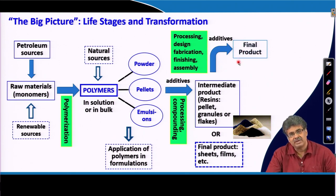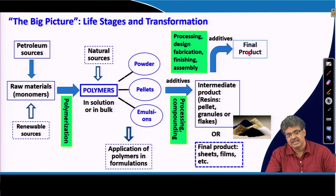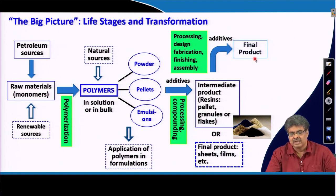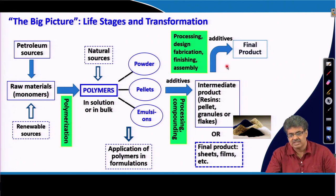In the laboratory, we do not actually make the final product — those are done on commercial lines. To estimate the product performance, specific samples with well-defined geometry are produced in the lab, and testing is done with those samples. The testing data are correlated to the final product performance. The entire steps that take synthesized polymers to the final product formation are collectively called polymer processing.